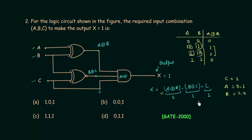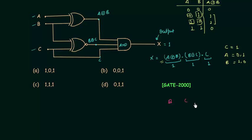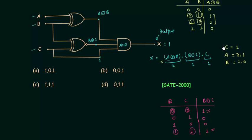Now analyzing the second condition, B XNOR C: truth table gives 00→1, 01→0, 10→0, 11→1. B XNOR C is high when B=0,C=0 or B=1,C=1. Since C is already equal to one, we must use the case where C=1, so B must equal one. With B=1, from the XOR condition A must equal zero. So the answer is A=0, B=1, C=1, and option D is correct.